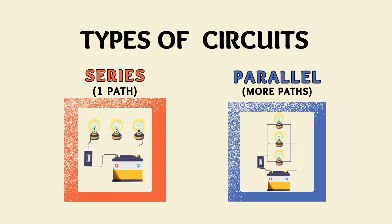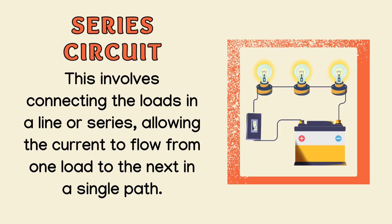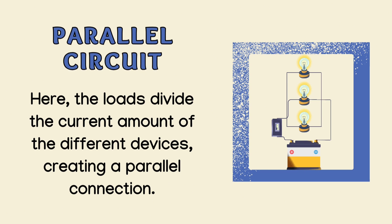Series circuits involve connecting the loads in a line or series, allowing the current to flow from one load to the next in a single path. In parallel circuits, on the other hand, the loads divide the current among the different devices, creating a parallel connection with two or more paths for the current to flow.